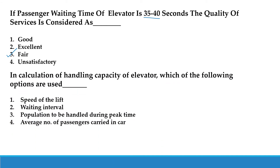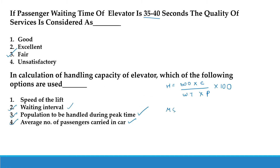In the calculation of handling capacity of an elevator, the formula is H = 300 × capacity × waiting time × peak-hour population / 100. The options used are: waiting time, population to be handled during peak time, and the average number of passengers carried in a car. Speed of the lift is not a direct variable in this formula. This is an MSQ-type question.